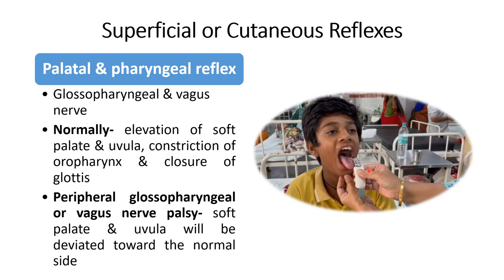Next is the palatal and pharyngeal reflex. The afferent supply is the glossopharyngeal nerve, and the efferent is both the glossopharyngeal and the vagus nerve. To perform this reflex, we have to touch the posterior pharyngeal wall and the palate with a tongue depressor. The response includes three components: elevation of the soft palate and uvula, constriction of the oropharynx, and closure of the glottis. If the patient has peripheral glossopharyngeal or vagal nerve palsy, the soft palate and uvula will deviate toward the normal side.